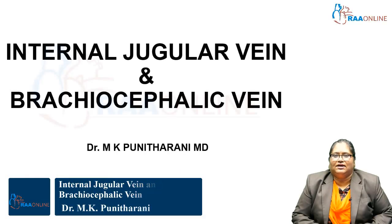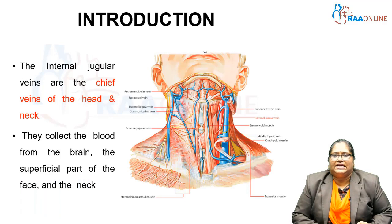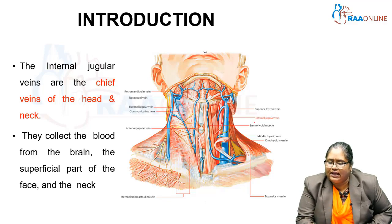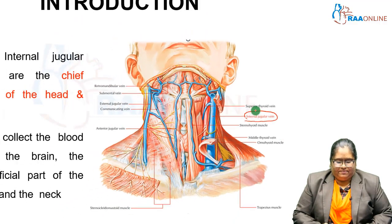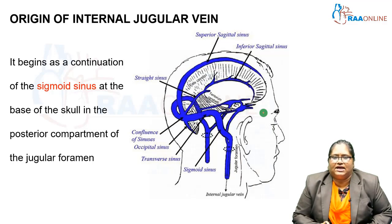Welcome to Raw Online. Today's session is about the internal jugular vein and brachiocephalic vein. The internal jugular veins are the chief veins of the head and neck; they collect blood from the brain and the superficial part of the face and neck. The internal jugular vein begins as a continuation of the sigmoid sinus at the base of the skull.